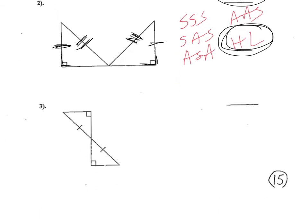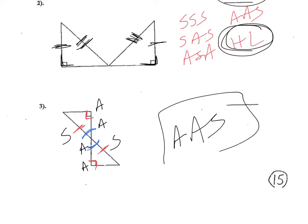The next one — we do have right triangles with right angles, and we have the hypotenuses, but nothing to tell us the legs are congruent. I'm short information, so I look for reflexive — which I don't have — or vertical angles. These two angles right here are vertical with each other; they're across from each other and share a common vertex. So I have this angle, this angle, and that side in each triangle. The correct answer is angle, angle, side.